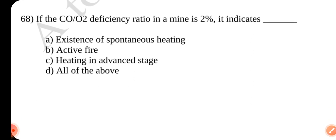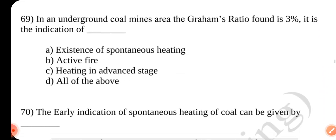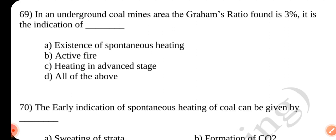Question number 68. If the CO divided by O2 deficiency ratio in your mine is 2%, it indicates dash. Answer seating in advanced stage. Question number 69. In an underground coal mines area, the Graham's ratio found is 3%. It indicates the indication of dash.